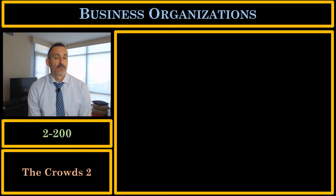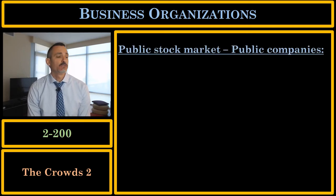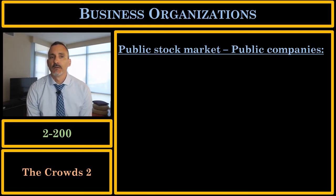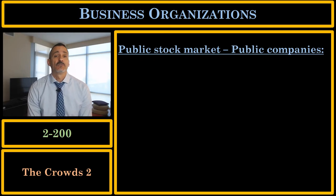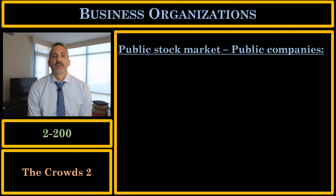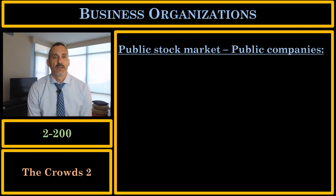These issues are most acute in the public stock market and in public companies. A public company is just a business organization, usually a corporation, whose stock is traded publicly on a stock market like NASDAQ or the New York Stock Exchange. Some famous examples: Disney, Microsoft, Google, GE, P&G — their stock is publicly traded on a stock market like the New York Stock Exchange or NASDAQ.